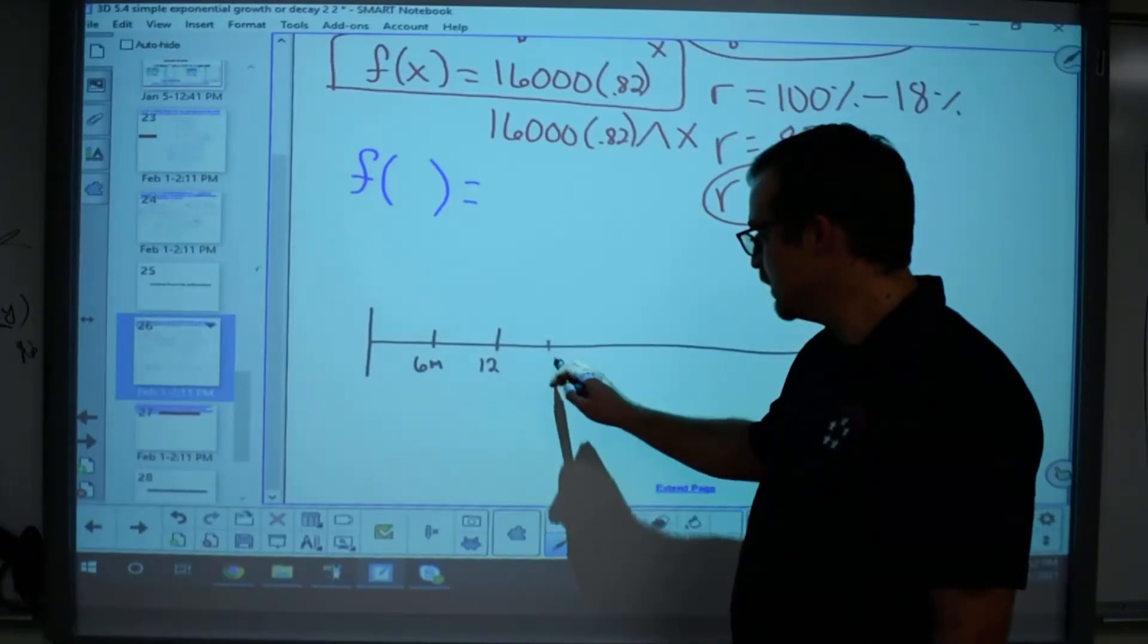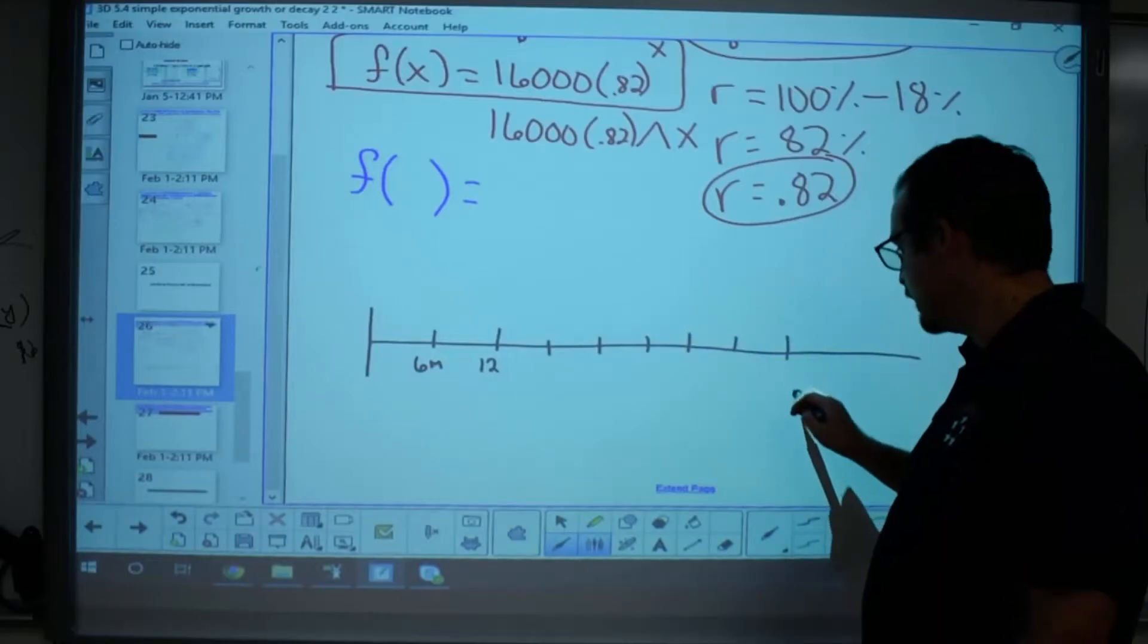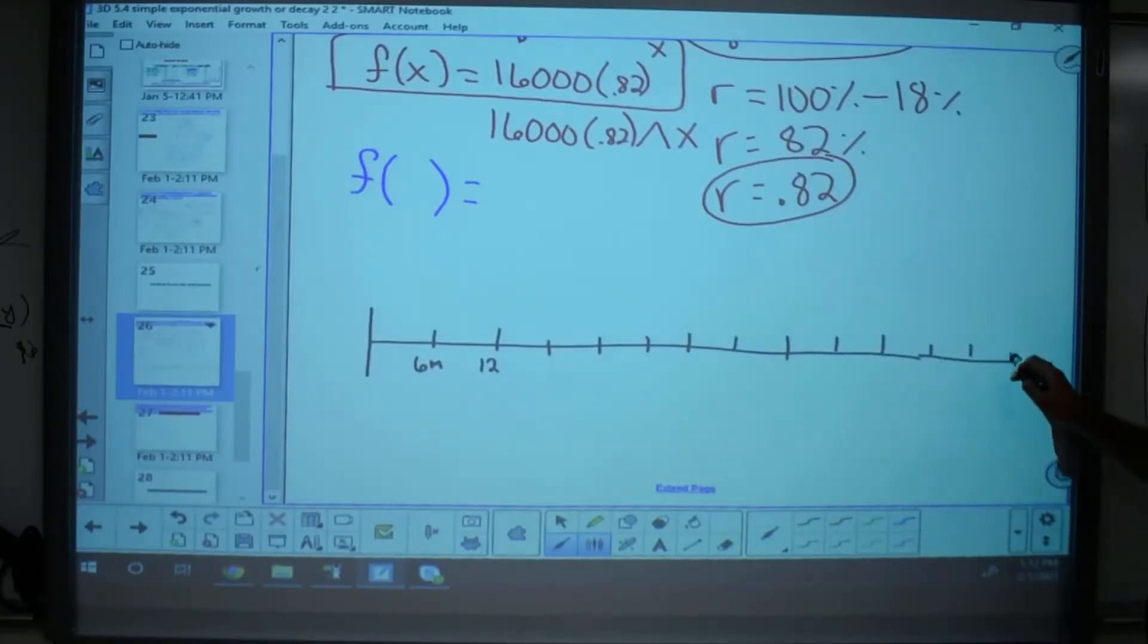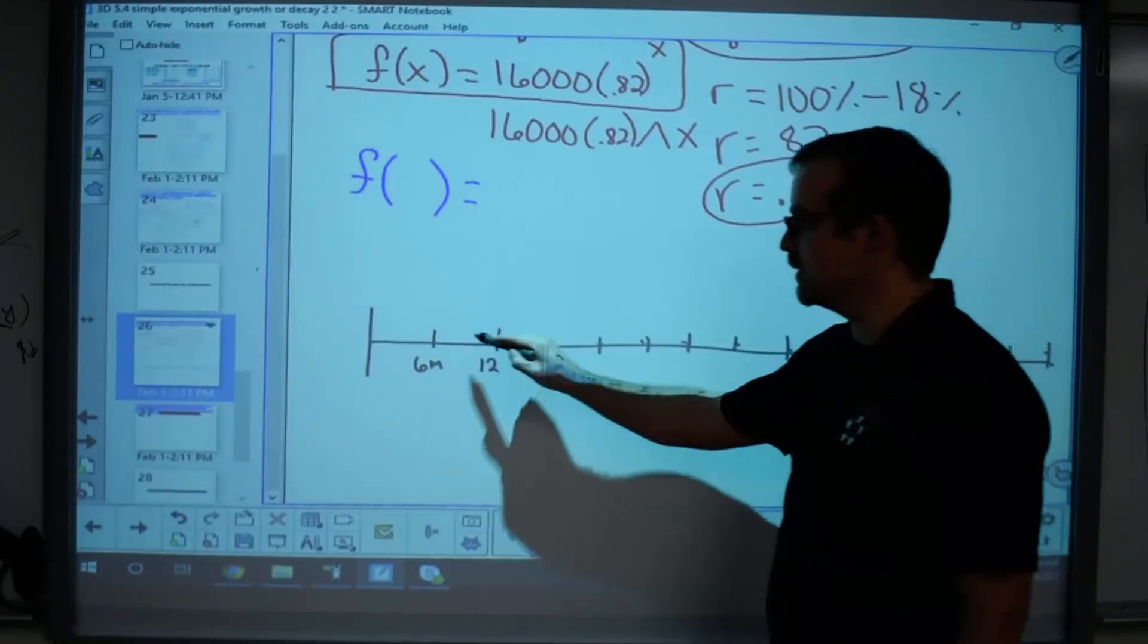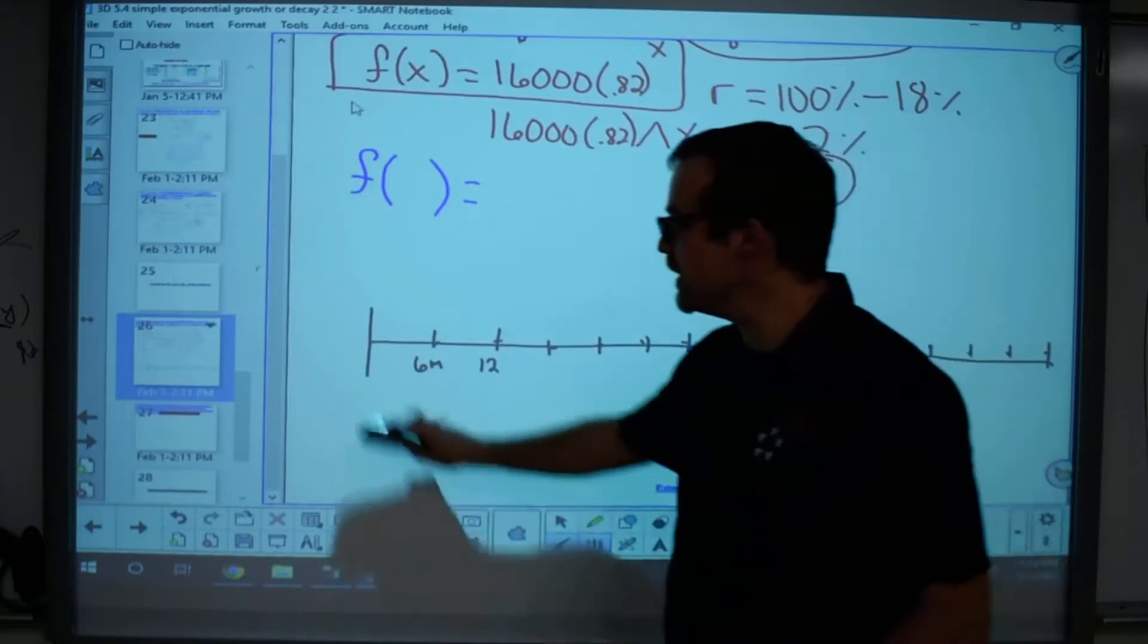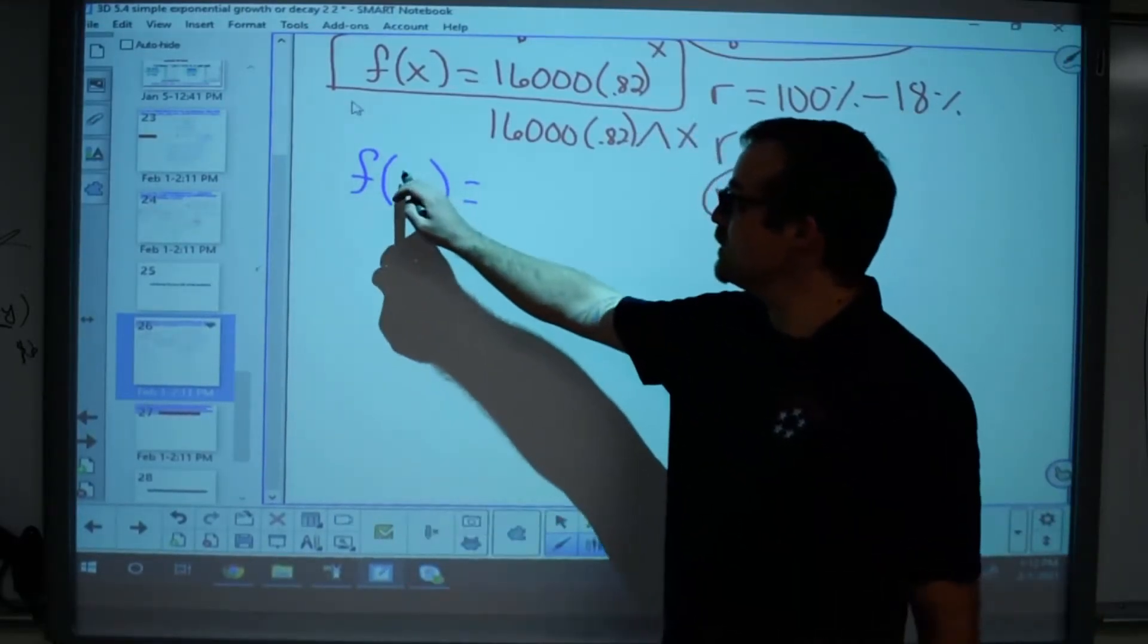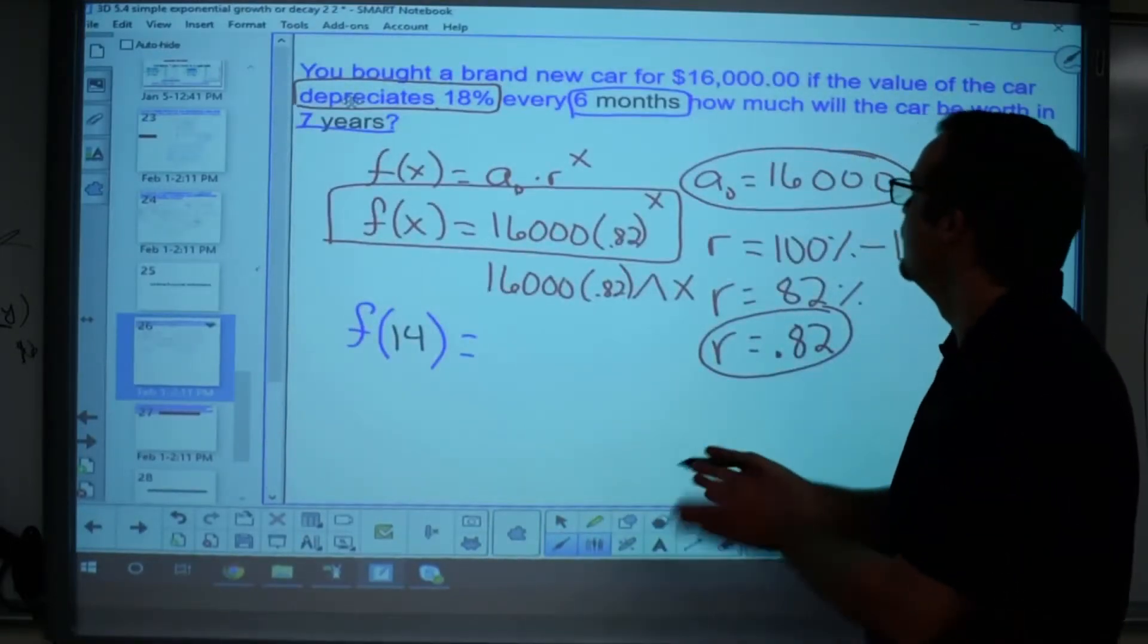But now I've got to go one year, two years, three years, four years, five years, six years, seven years, right? And so how many times does that depreciate? One, two, three, four, five, six, seven, eight, nine, 10, 11, 12, 13, 14 times. So it's two times years for seven years. It's going to be 14 depreciations. So because it depreciates 14 times, that's what X is. So I have to plug in 14 instead.